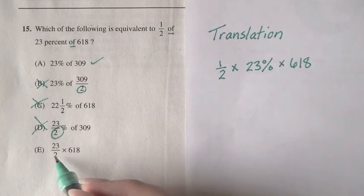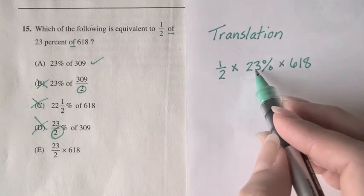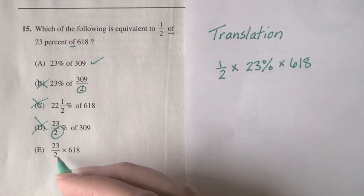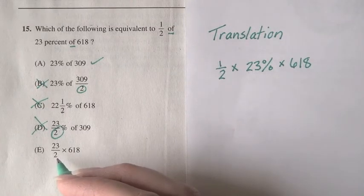For E, we have 23, one-half, and 618, but we've lost the percent sign, so that doesn't make sense either.